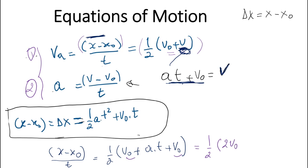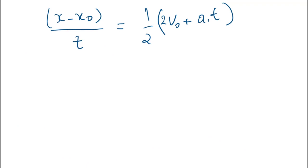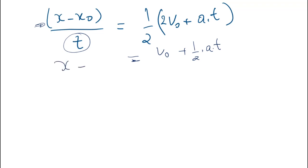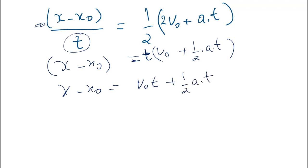Combining, we get (x minus x₀) over t equals one-half times (2v₀ plus a·t), which simplifies to v₀ plus one-half times a·t. To isolate x minus x₀, we multiply both sides by t, giving: x minus x₀ equals v₀·t plus one-half times a times t times t.